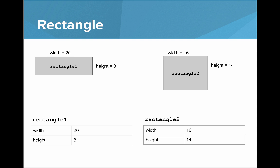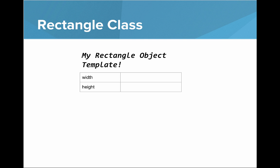So here I have our rectangles from earlier and a little table below. You can see that rectangle one has a width of 20 and a height of 8. And rectangle two has a width of 16 and a height of 14. So now we have a little template for our rectangle class. We can see that every rectangle has a width and a height. But the specific objects, they have different values there.